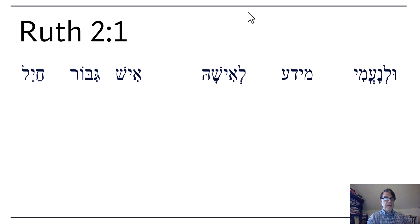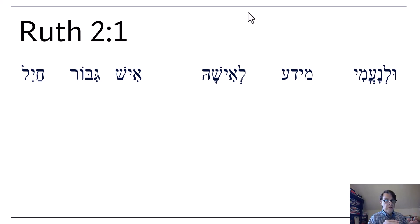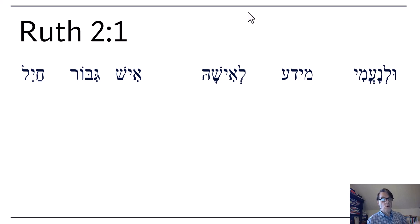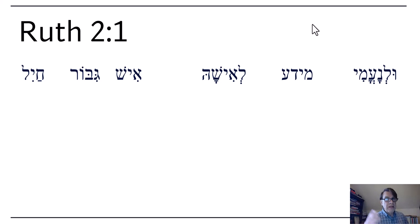Naomi and her husband and her two sons go down to Moab. They marry, but they don't have any children. The men all die — the father, the two sons die. Naomi goes back to Bethlehem to her own people. Orpah stays in Moab, but Ruth comes with her back — wherever you go, I will go. So now we're in Bethlehem and the story continues.